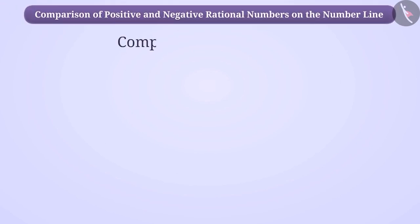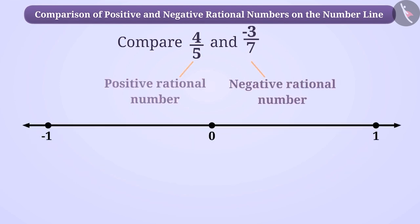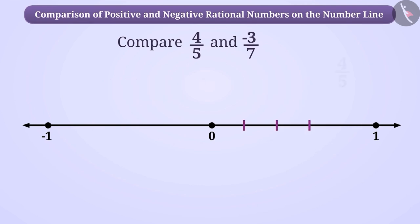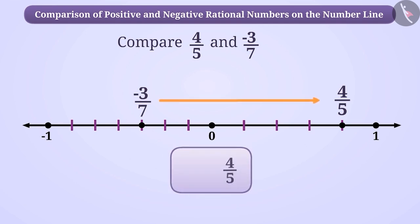Similarly, now let's compare 4/5 and -3/7. Here, 4/5 is a positive rational number and -3/7 is a negative rational number. To compare them, we will represent them on the number line. 4/5 can be represented in this way and -3/7 can be represented in this way. As you can see, 4/5 is to the right of -3/7. Therefore, we can say that 4/5 is a greater rational number than -3/7.